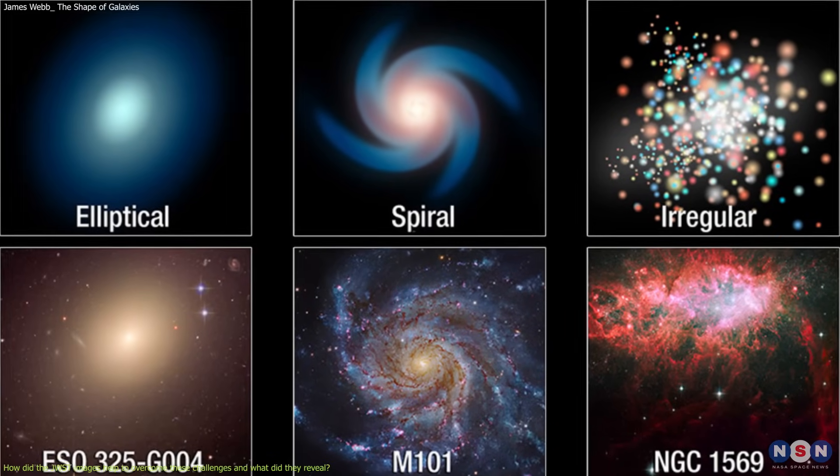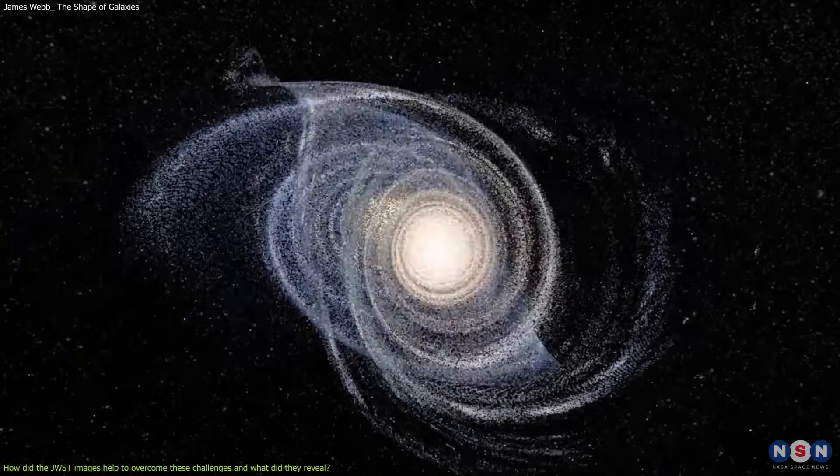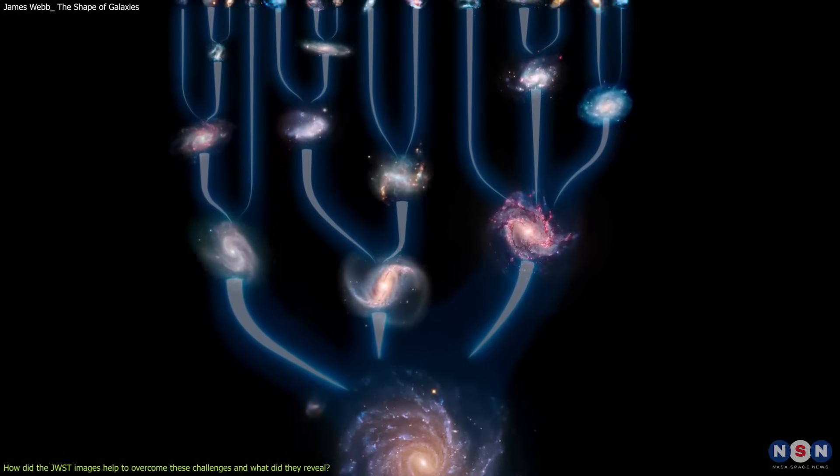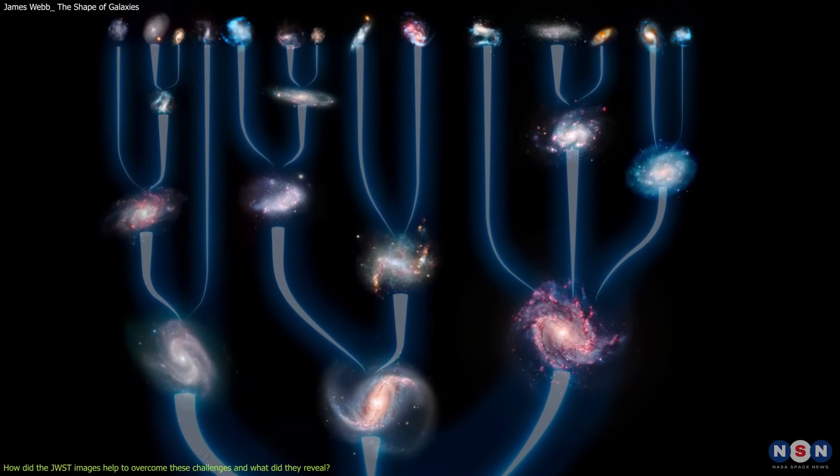They analyzed 873 galaxies that met these criteria and visually classified them into different types based on their morphology. The types were spiral, elliptical, irregular, merger, and unclassifiable. The spiral type was further divided into subtypes based on the number of arms and the presence of a bar.